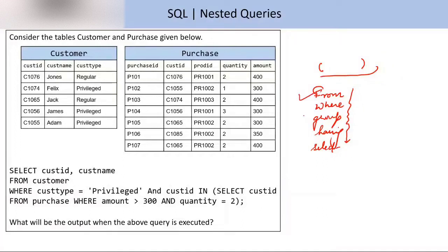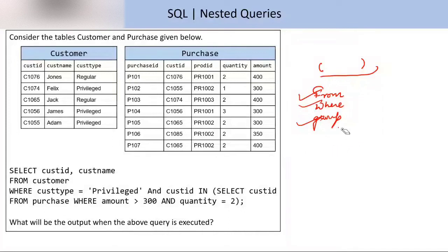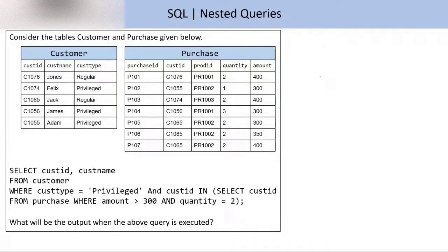The execution order is: first FROM, then WHERE, then GROUP BY and HAVING, then SELECT. Since this is a nested query, we will solve the inner part first — the bracket part is the inner query. We check FROM: yes, we have FROM, so we are considering the purchase table.